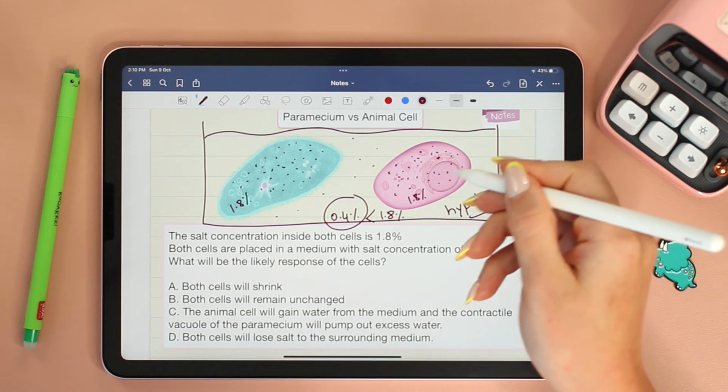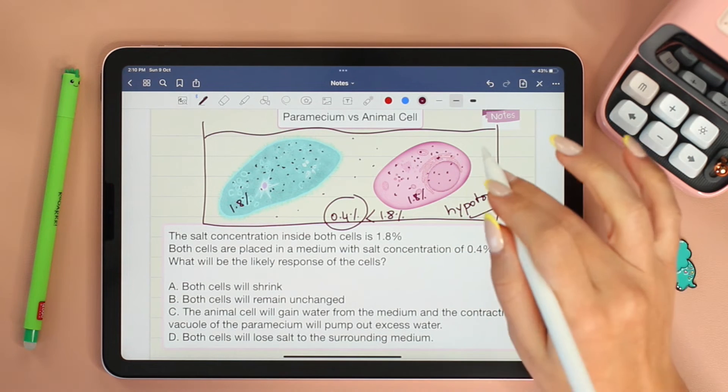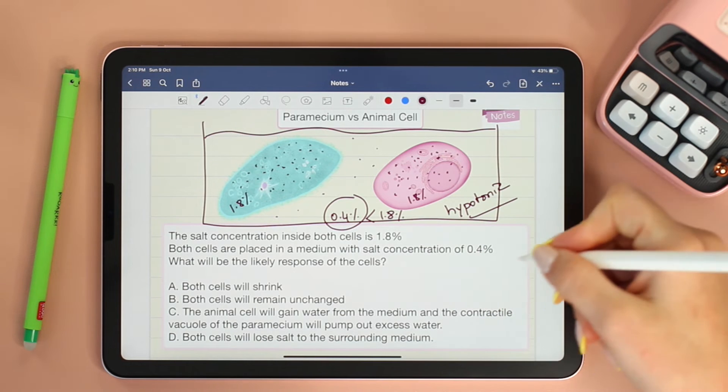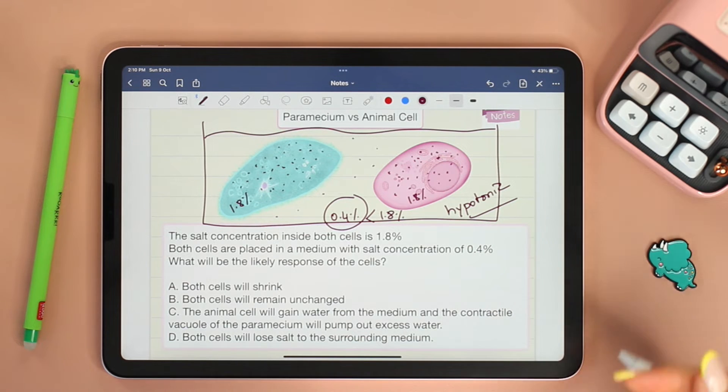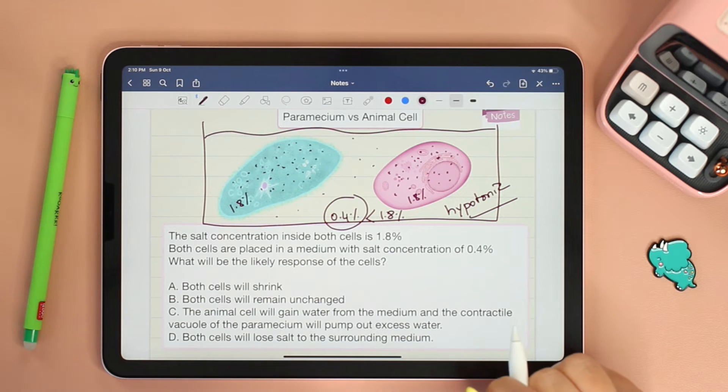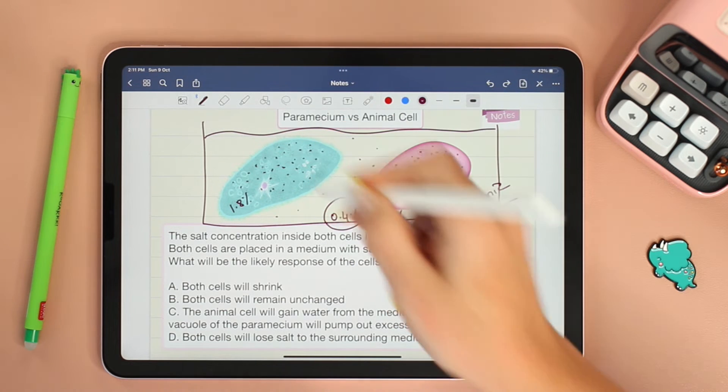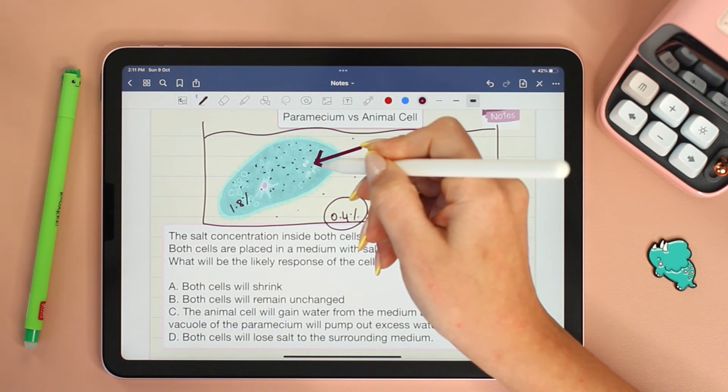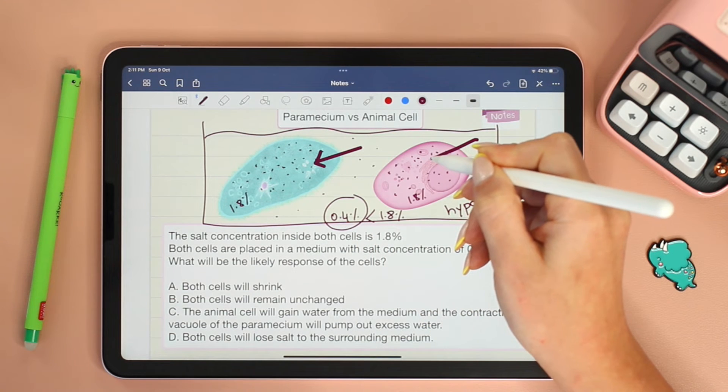The water molecules will move from an area of low solute to high solute. Now if you need further explanation as to why, I will link my previous video in the description box. So from low solute to high solute means that the water molecules will move into both cells.